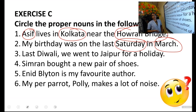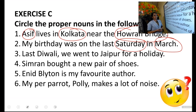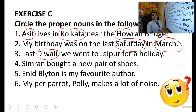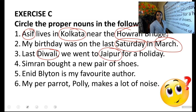Third: Last Diwali, we went to Jaipur for a holiday. Can you identify the proper nouns here? Proper nouns begin with a capital letter, so Diwali is a proper noun because it is the name of a festival. And Jaipur is the name of a place.